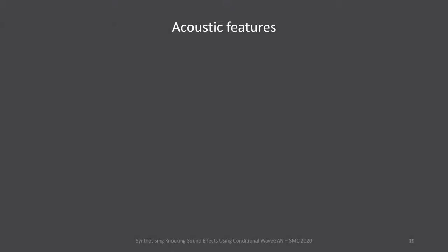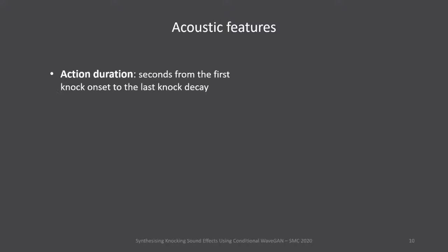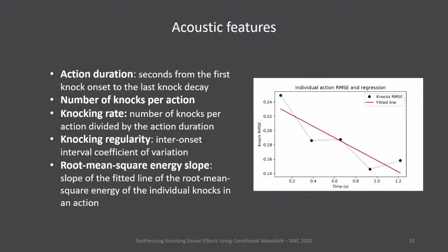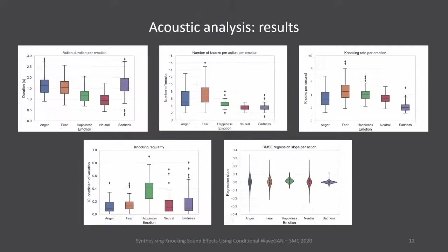To understand the dataset and later compare it with synthesized sounds, we extracted acoustic features: action duration, number of knocks per action, knocking rate, knocking regularity, and root mean square energy slope. An example of the RMS energy slope feature shows dots representing knocks in an action, with time on the x-axis and RMS energy on the y-axis. The fit line has a negative slope, indicating the action has a negative energy pattern.